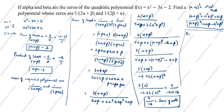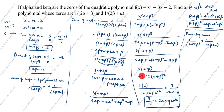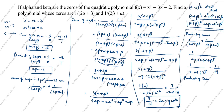Next step: product of zeros. Product = 1/(2 alpha + beta) × 1/(2 beta + alpha) = 1/[(2 alpha + beta)(2 beta + alpha)]. The denominator is the same expression we already simplified: alpha beta + 2(alpha + beta)². Substituting: minus 2 + 2(3²) = minus 2 + 18 = 16. So product of zeros equals 1 divided by 16.